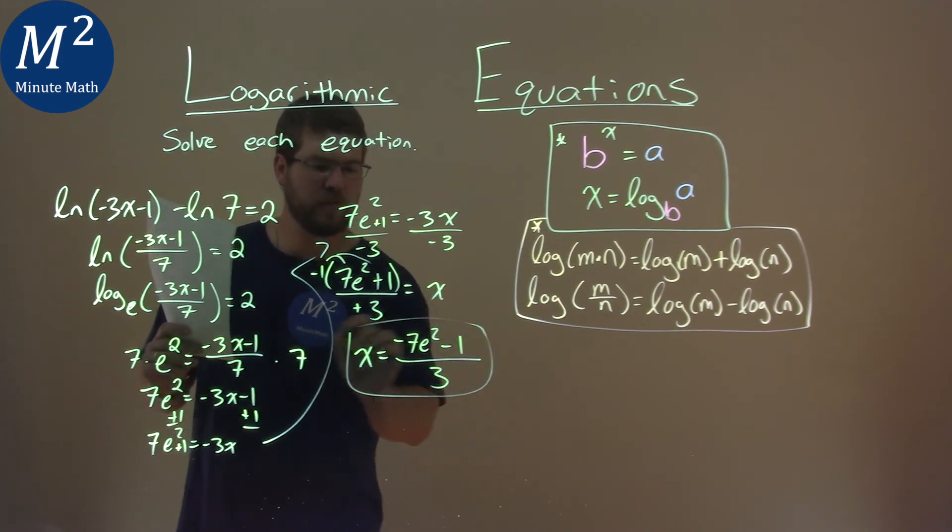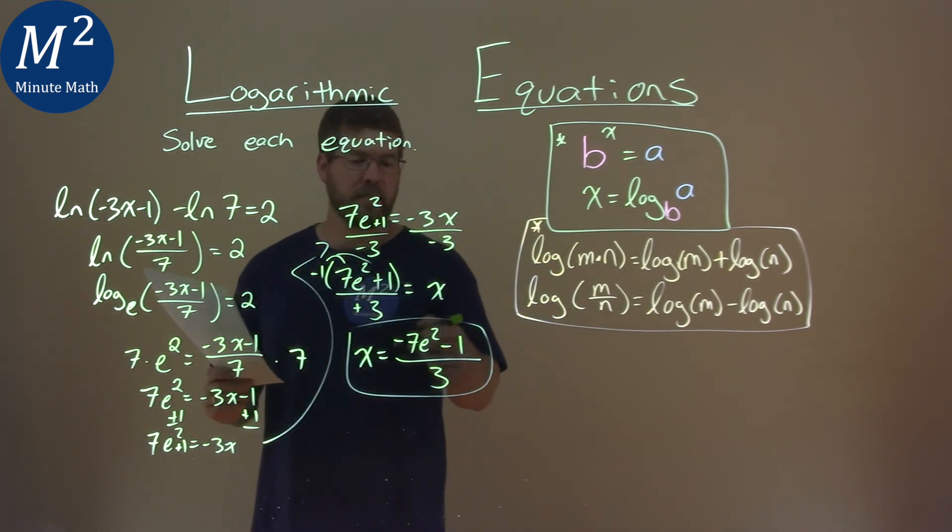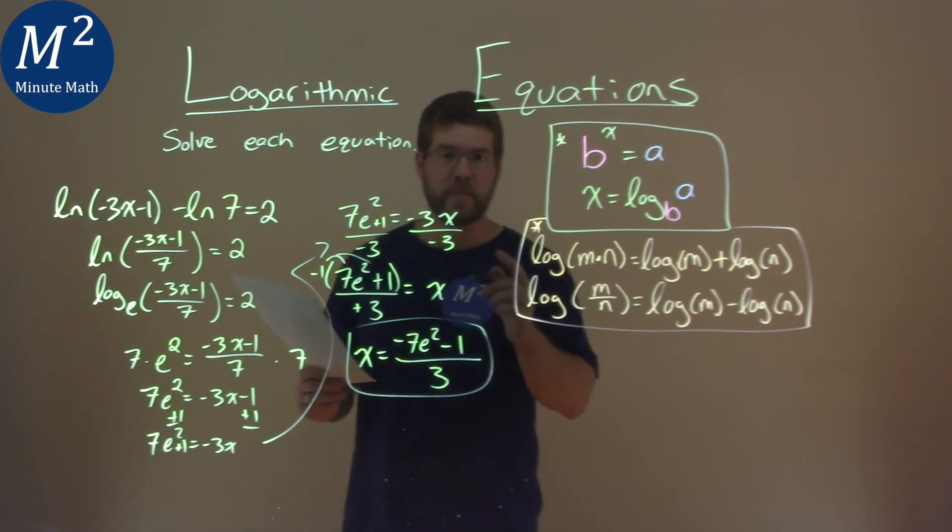And so now our final answer here is x equals negative 7e squared minus 1 over 3.